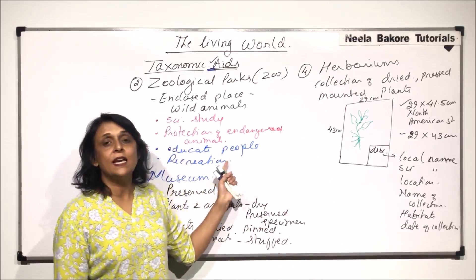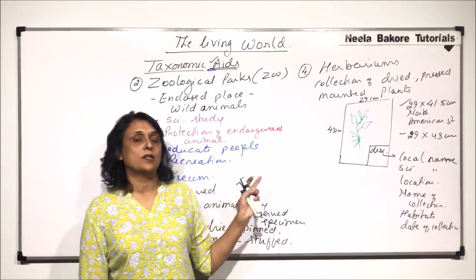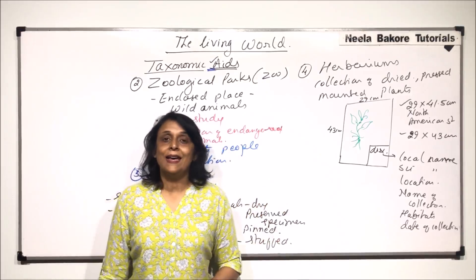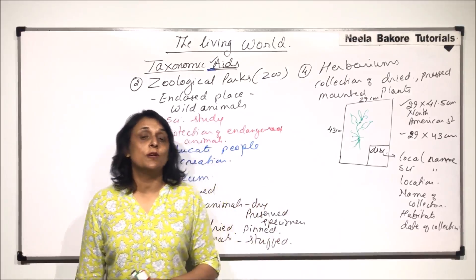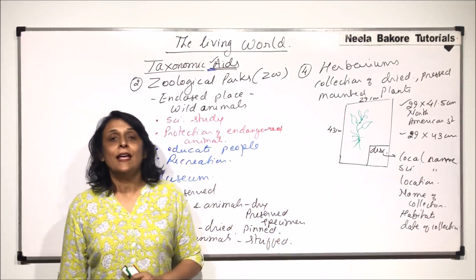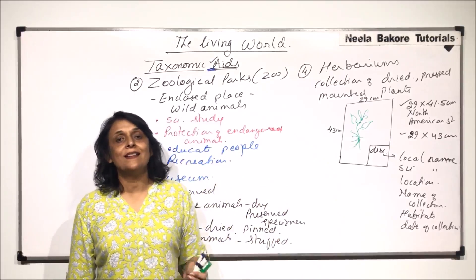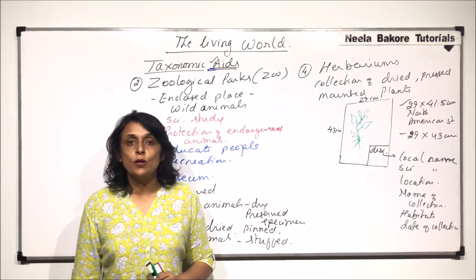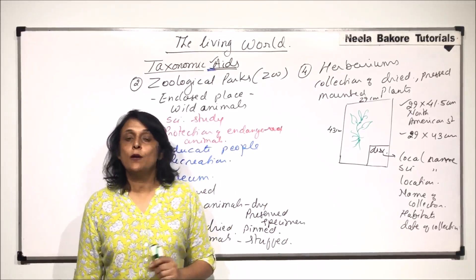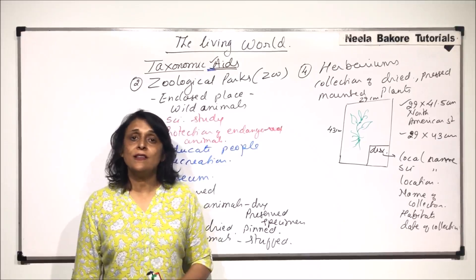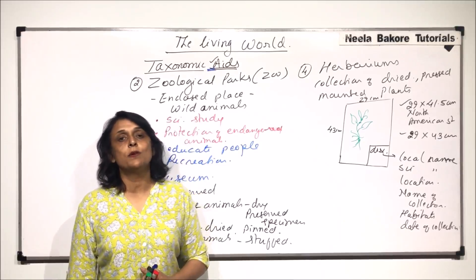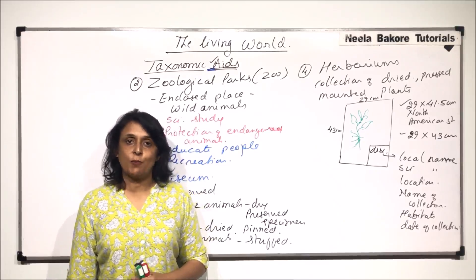So we have seen four taxonomic aids so far. In the next part, we will talk about some more — what exactly is a manual, what is a monograph, and what exactly is a key.